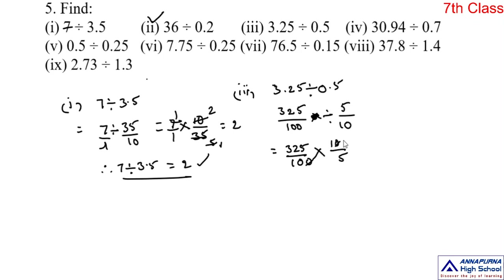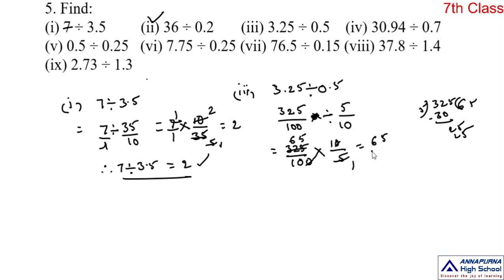So, 325 by 100 into 10 by 5. We can cancel the zeros: 10 and 100 — 10 ones are 10, 10 tens are 100. Now cancel 325 and 5: in units, 5 is there, so it is divisible by 5. Dividing 325 by 5: 5 sixes are 30, remainder 2; bring down 5 — 5 fives are 25. So 325 by 5 is 65. Which is equal to 65 by 10. Now convert this decimal fraction into a decimal number — numerator is 65, denominator has one zero, so count one place from the right-hand side. The answer is 6.5.